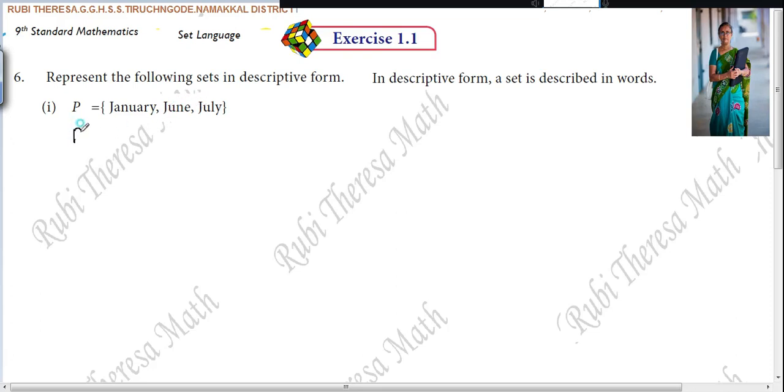So how can you write this? You have to start with the set of. The set of what month? English months. English months starting with letter J. The set of English months starting with letter J. Is it okay?